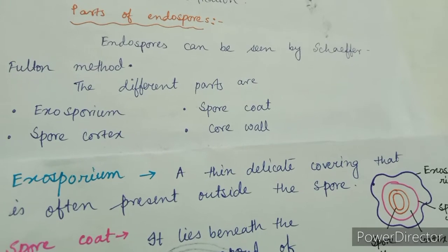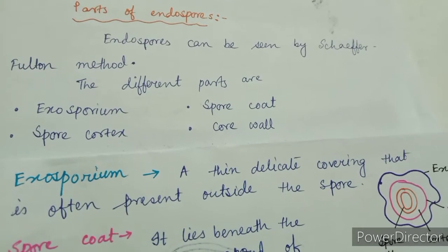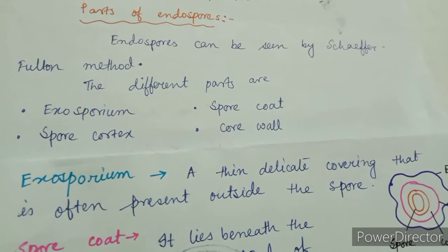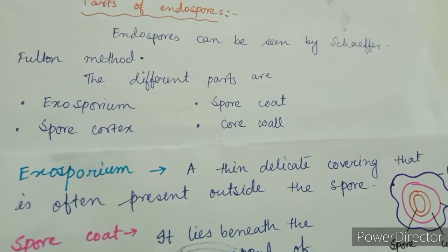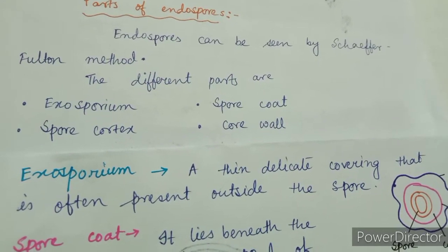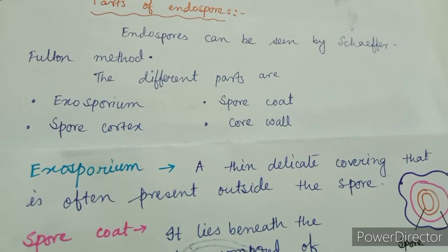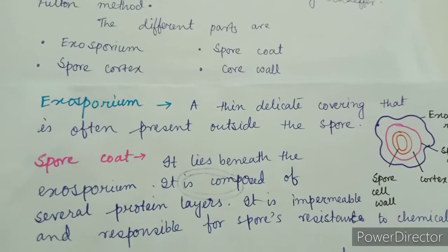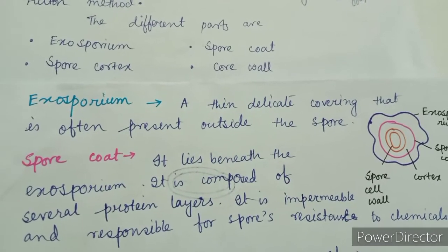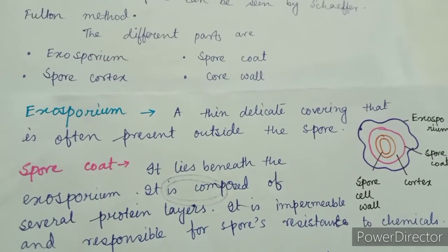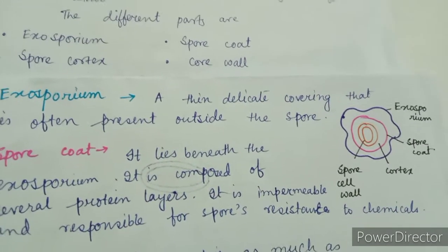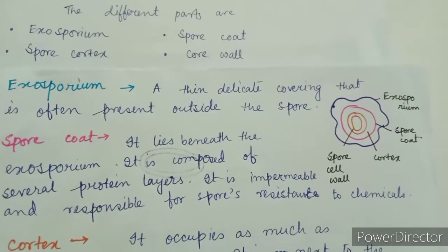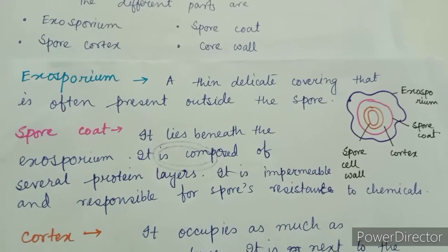Parts of endospore: Endospores can be seen by the Schaeffer-Fulton staining method. The different parts of the endospore are the exosporium, spore coat, cortex, and core wall. The exosporium is a thin, delicate covering that is often present outside the spore — it is the external part.